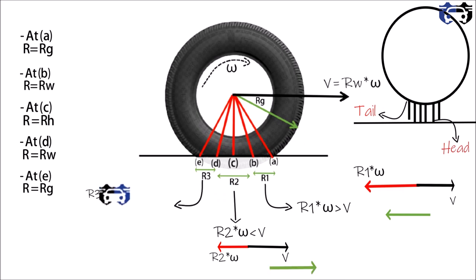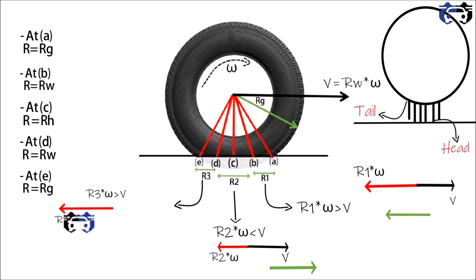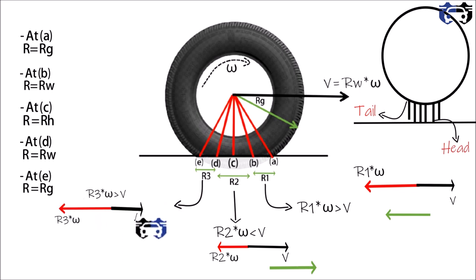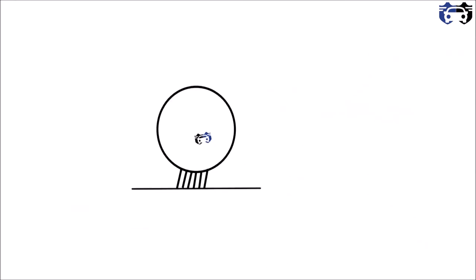Similarly, in section d to e, the tangential velocity r3 times omega is greater than v, so the head of the tread will try to shift towards the left compared to the tail.